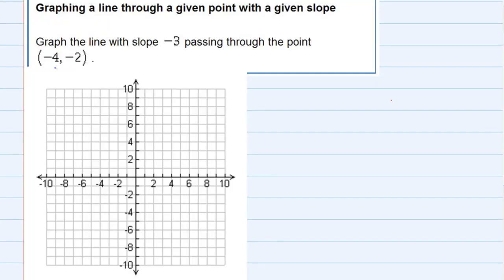Graphing a line through a given point with a given slope. We're asked to graph the line with slope -3 passing through the point (-4, -2).